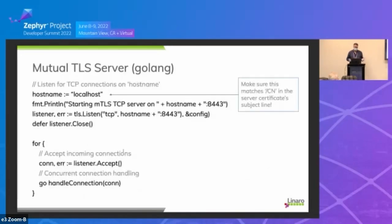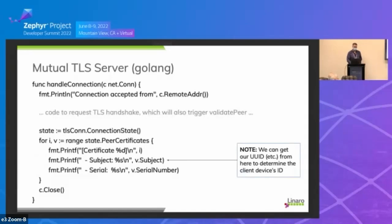We just start listening for connections. There's some simple logging, and we're listening on port 8443 and start to accept connections, offloading every connection request to the handle connection call. The handle connection does basic validation on the CA signature and the expiration date of the certificate.